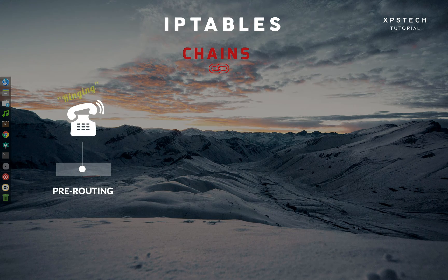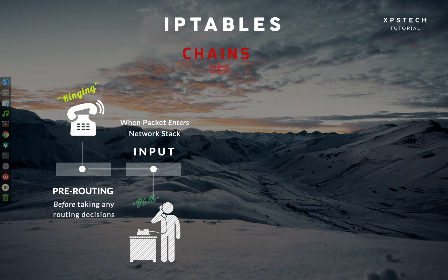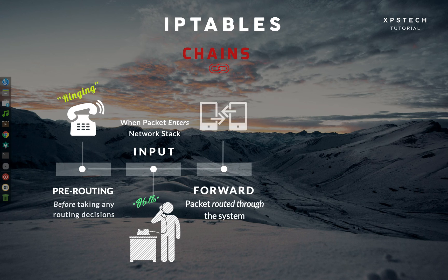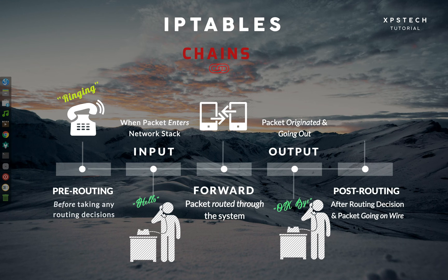The pre-routing chain is applied to any incoming packet very soon after entering the network stack, before any routing decisions have been made. The input chain is the point post pre-routing when a packet enters the system. The forward chain is applied to a packet that is forwarded through your system. The output chain is applied to packets originated from your system and going out. Finally, post-routing is the opposite of pre-routing — it is applied to outgoing or forwarded traffic after the routing decision has taken place and just before the packet is put on the wire.